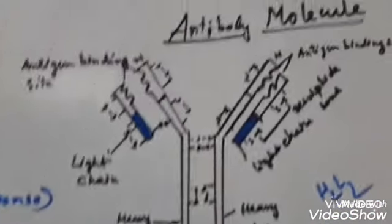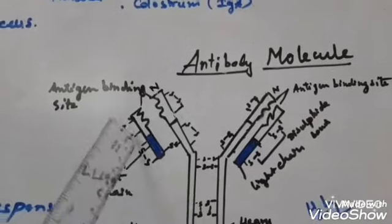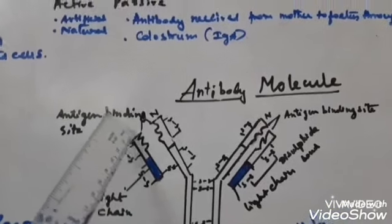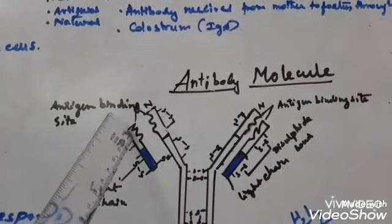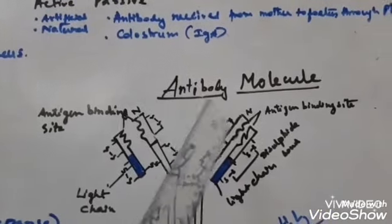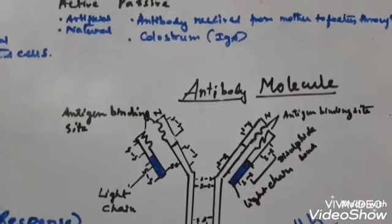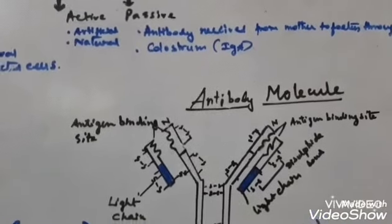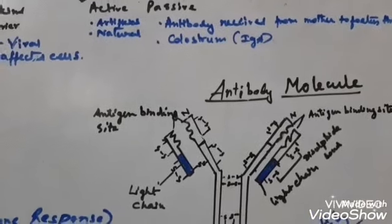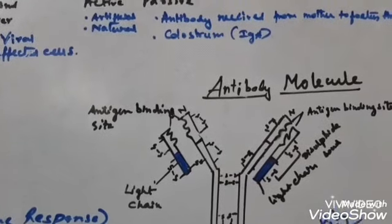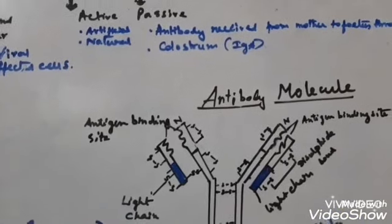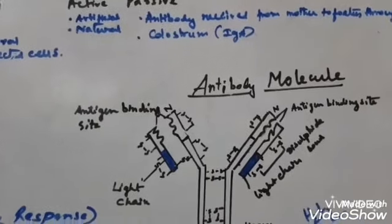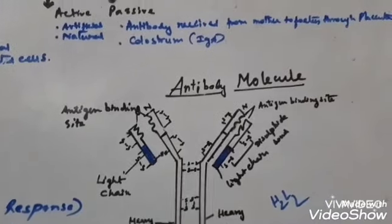The antibody molecule has two heavy chains and two light chains (H2L2). The antigen-binding sites are located on both sides of the Y-shaped structure. IgG is the most prevalent antibody in the blood, followed by IgA and IgM. IgA is the most abundant immunoglobulin found in colostrum.